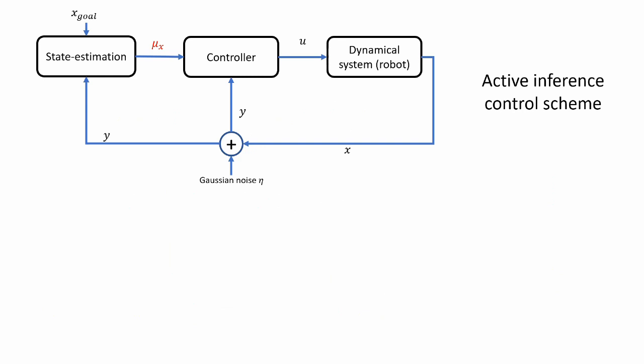From a control perspective, the diagram will look as follows. We would have a dynamical system, the robot. It outputs some state. That state will be observed and given some noise, some measurement model. There will be some noise on the sensor, for instance, the encoders. The observation will go into the controller and into the state estimator.